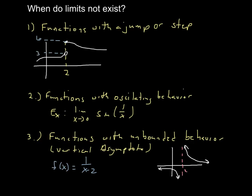A key takeaway: just because a function doesn't exist at a particular x-value doesn't mean the limit can't exist — at a, the function value did not exist but the limit did. Also, at b, the function value and limit were the same, but that doesn't have to happen — f(c) was 6 but the limit as x approaches c was 5. Now let's look at when limits don't exist. First: if a function has a jump or step discontinuity, the limit does not exist at that point, such as at x equals 2 here.